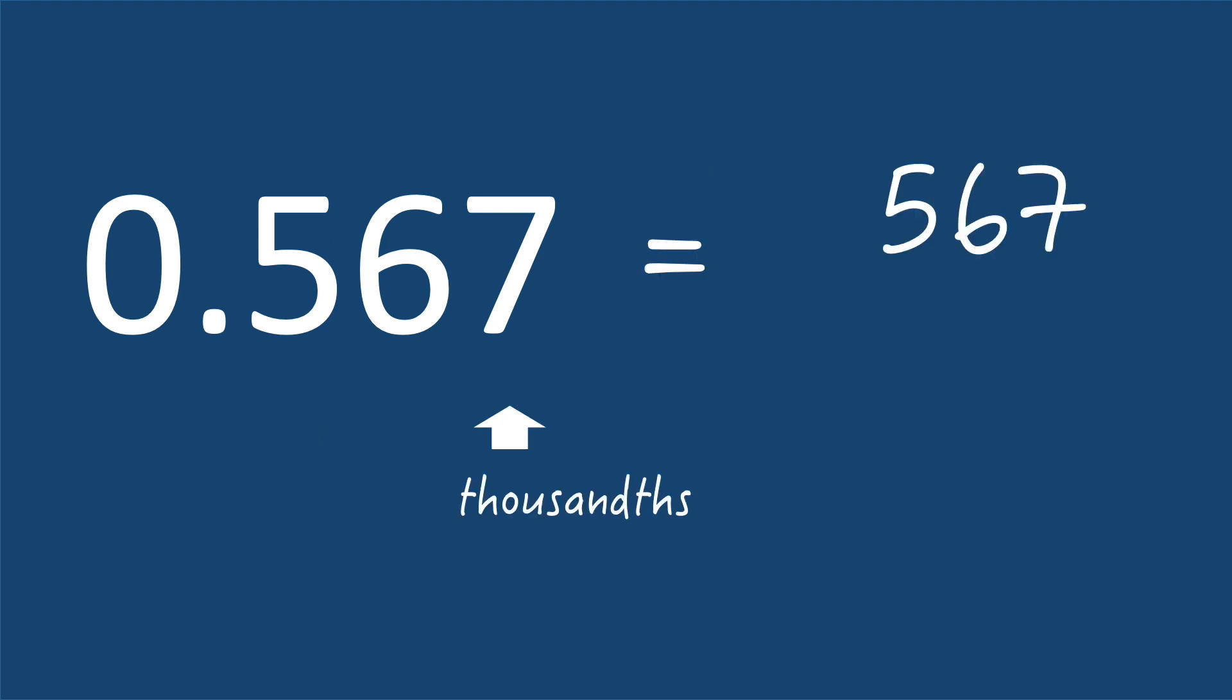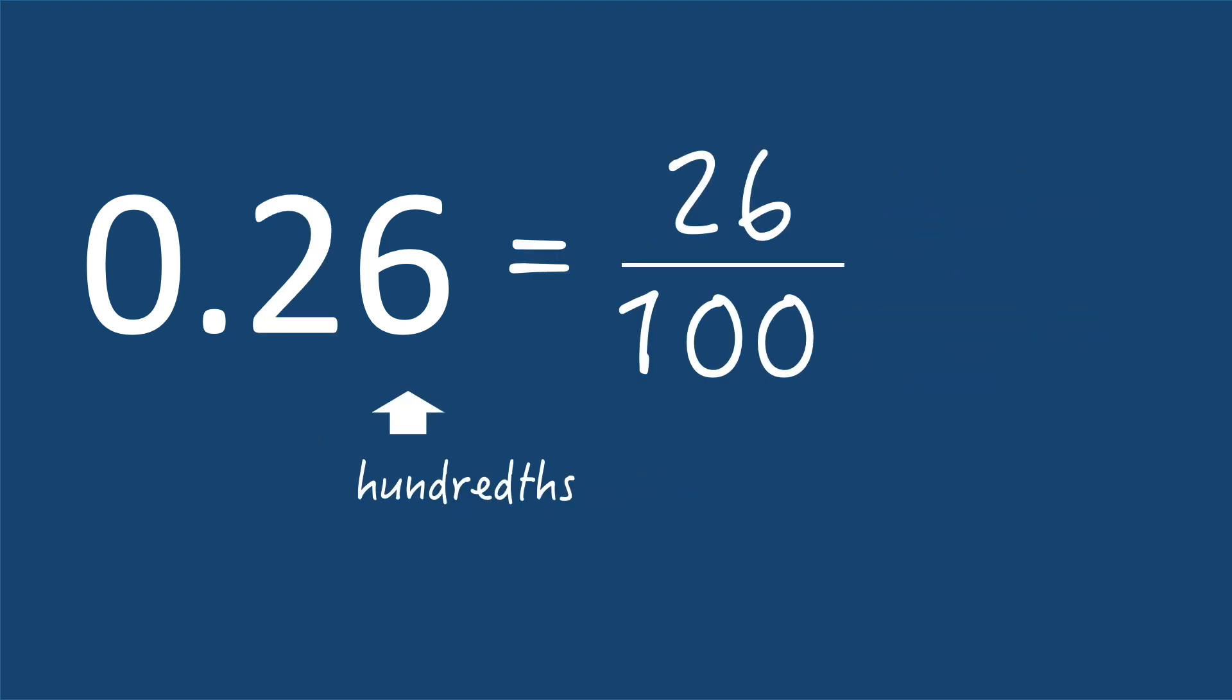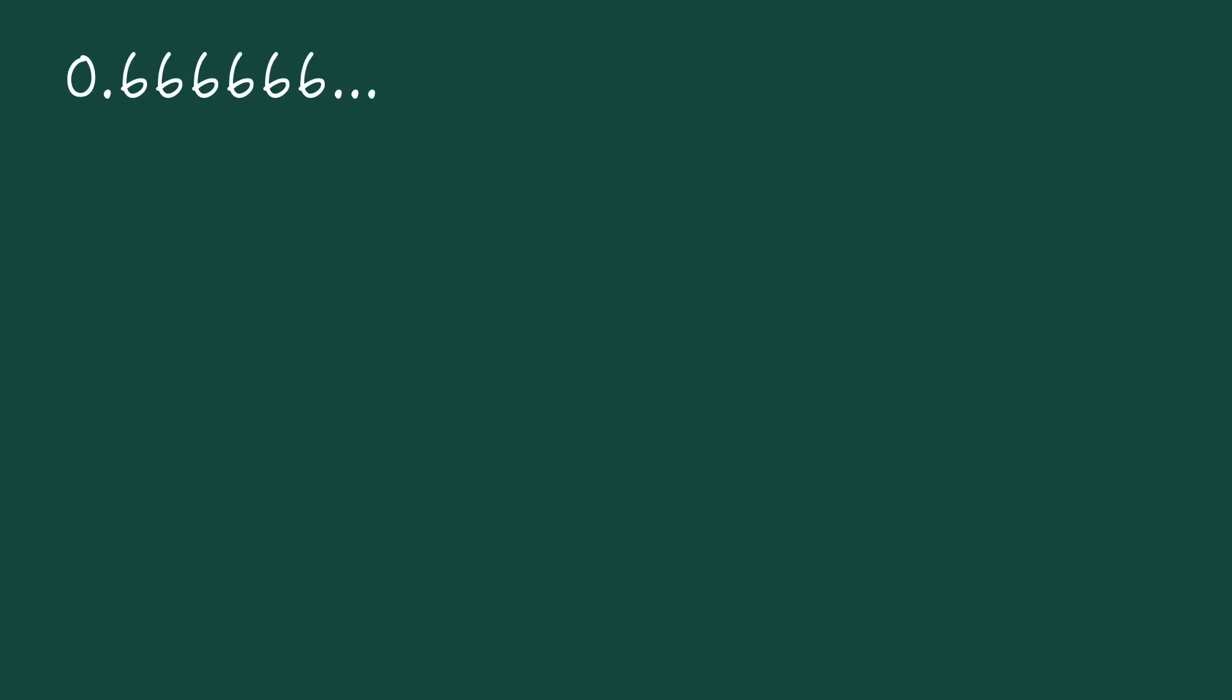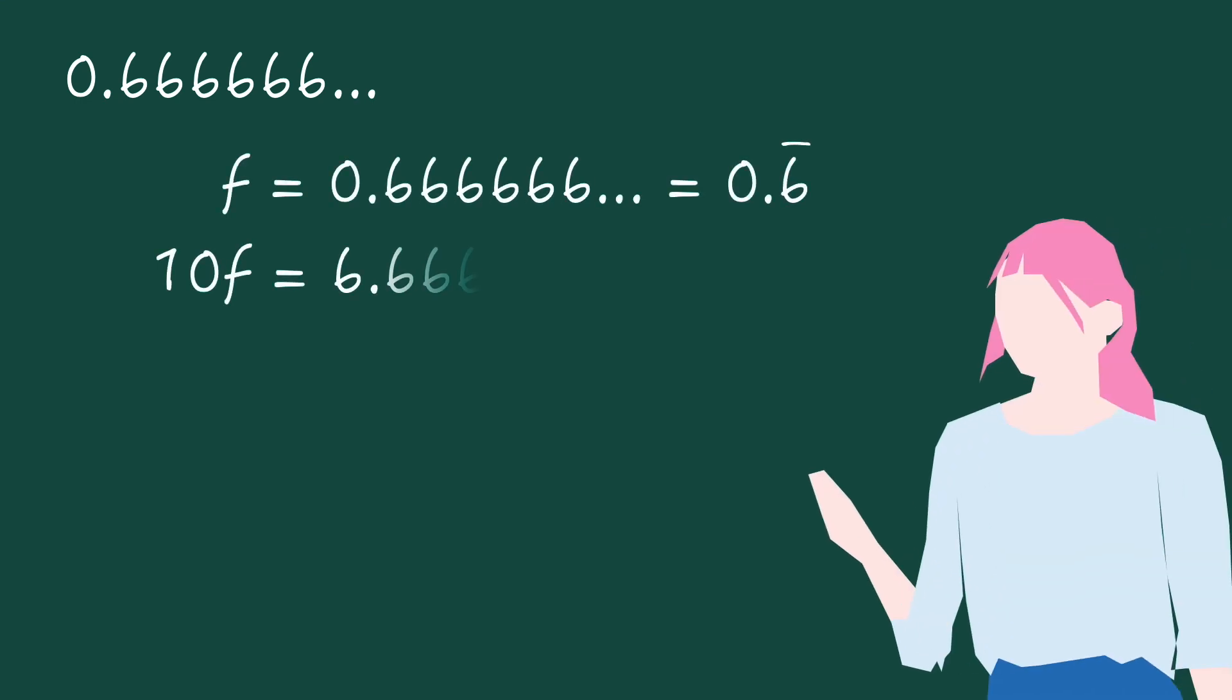Any terminating decimal can clearly be expressed as a fraction, starting with the denominator corresponding to the place value, and then simplifying if possible. There's a very neat trick involving just a little algebra that we can apply to convert a recurring decimal to a fraction.